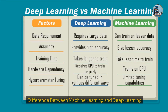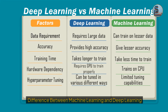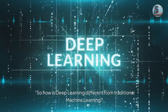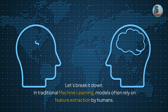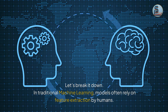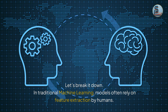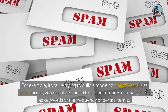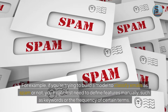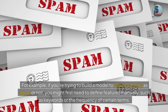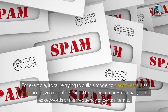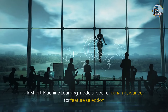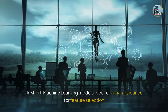So how is deep learning different from traditional machine learning? In traditional machine learning, models often rely on feature extraction by humans. For example, if you're building a model to classify emails as spam or not, you might first need to define features manually — such as keywords or the frequency of certain terms. The model then uses these predefined features to make predictions. In short, machine learning models require human guidance for feature selection.